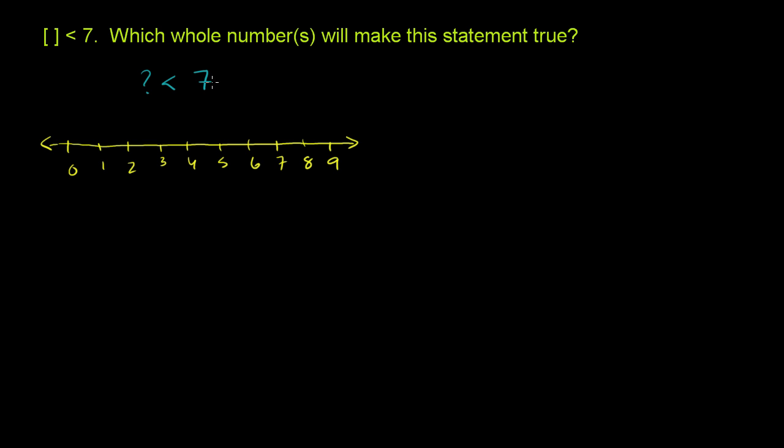So what numbers satisfy that? Well, anything below 7. Any whole number below 7. If we look at 7 on the number line, what are all the whole numbers below 7 that are less than 7? Well, we have 6, we have 5, we have 4, 3, 2, 1, or 0.